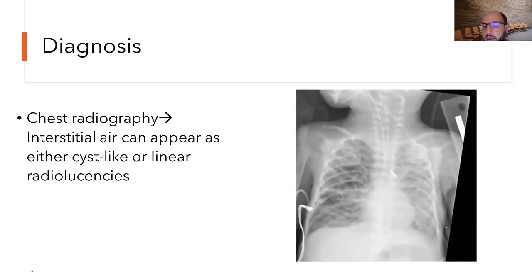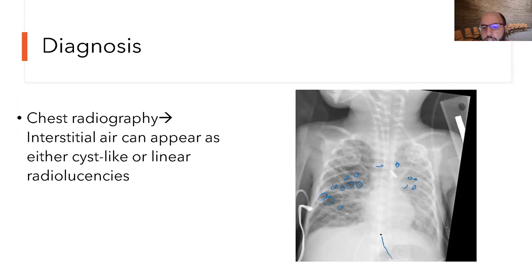On another X-ray example, the lung looks very hazy — similar to RDS or early chronic lung disease — but you can see air bubbles and cystic areas throughout. The baby is already intubated and has an NG tube, with a slightly flat diaphragm indicating the lung is trying to expand. This is a typical PIE presentation.